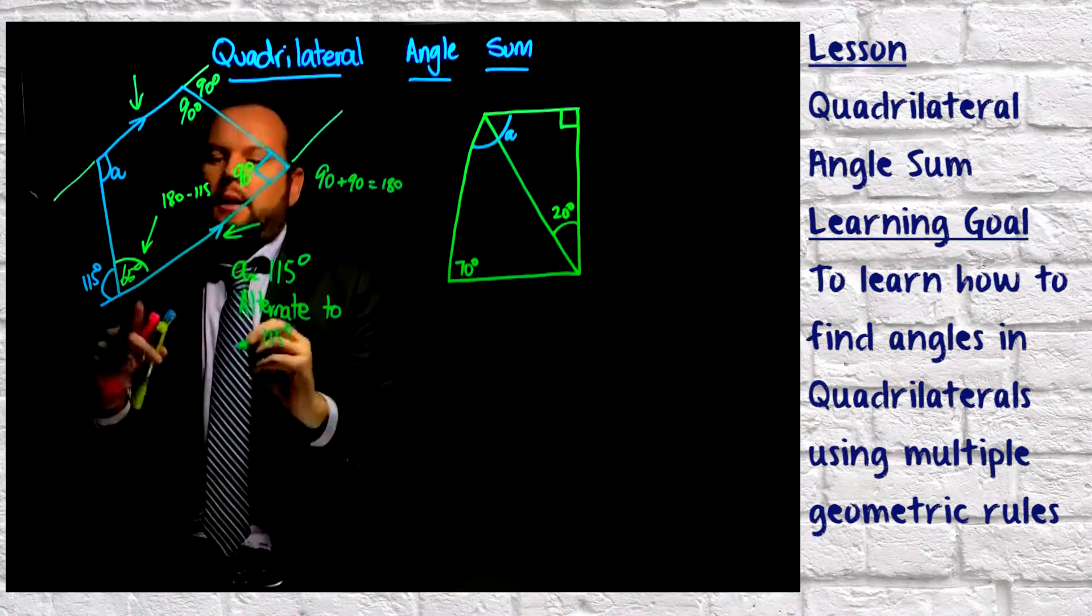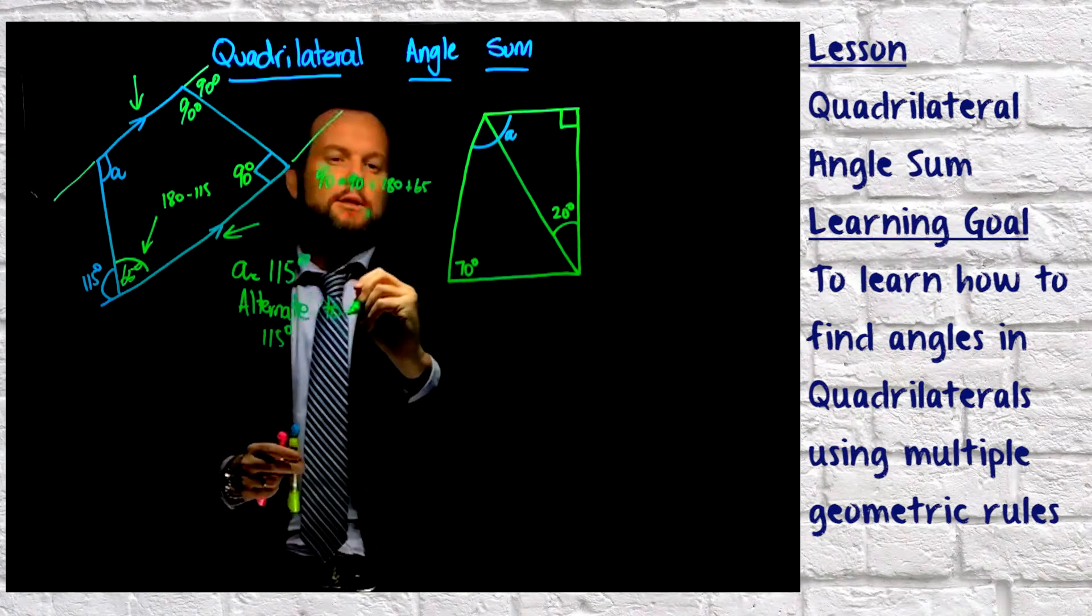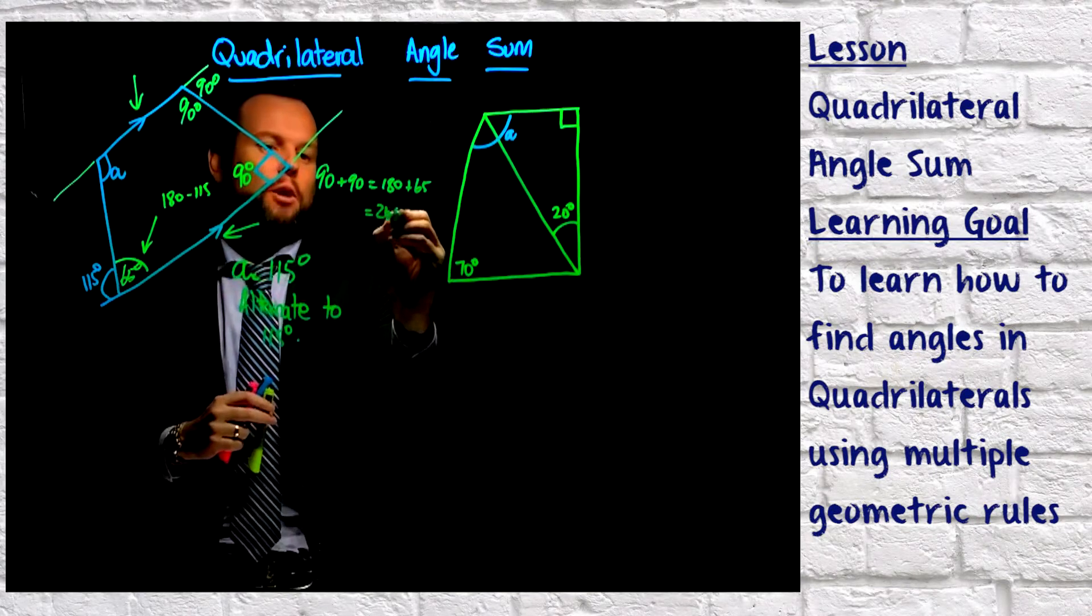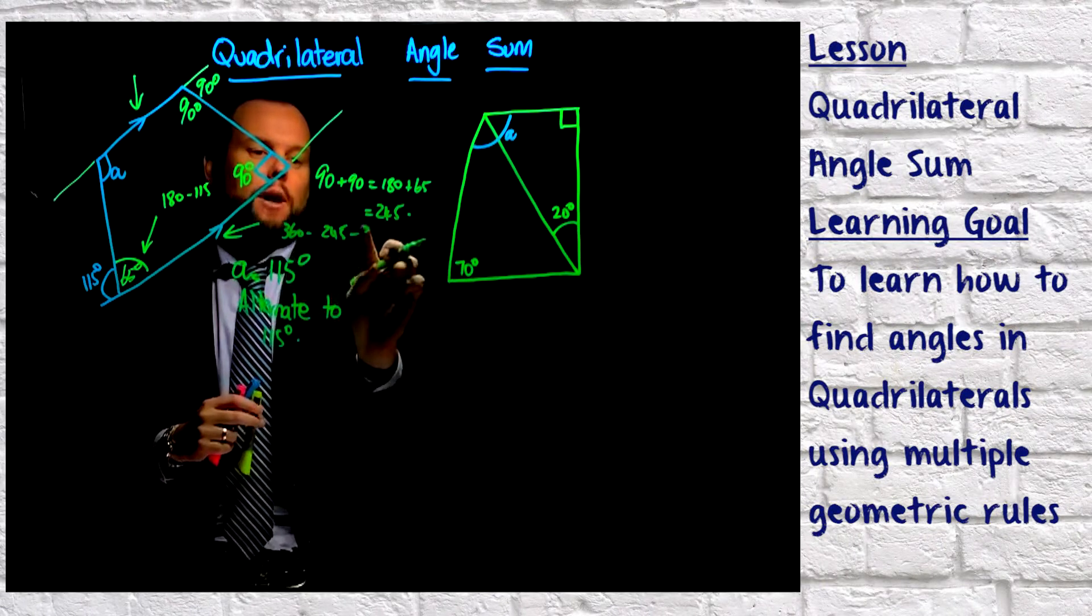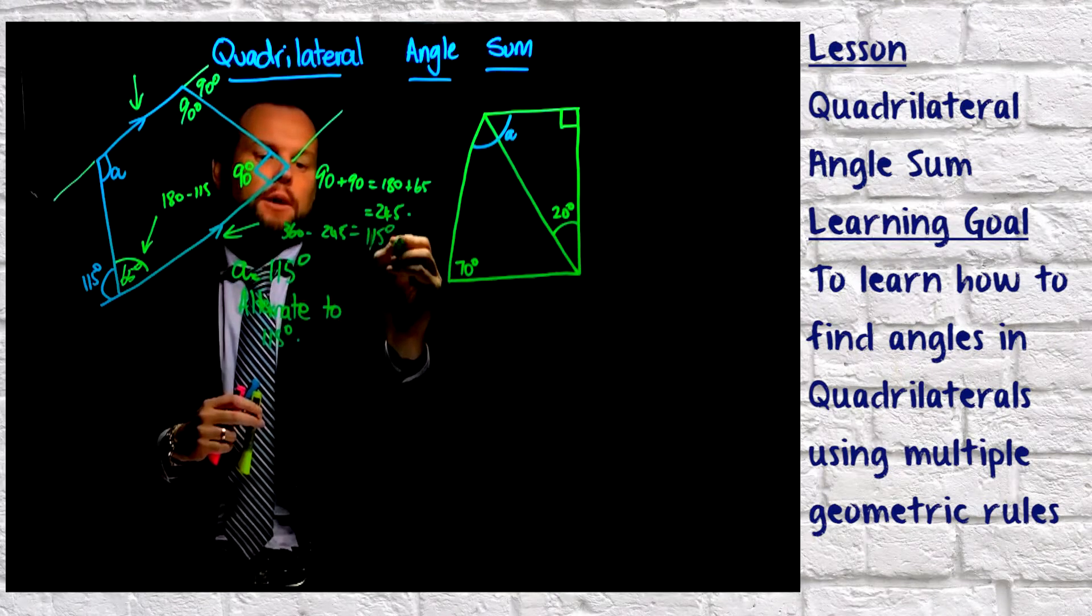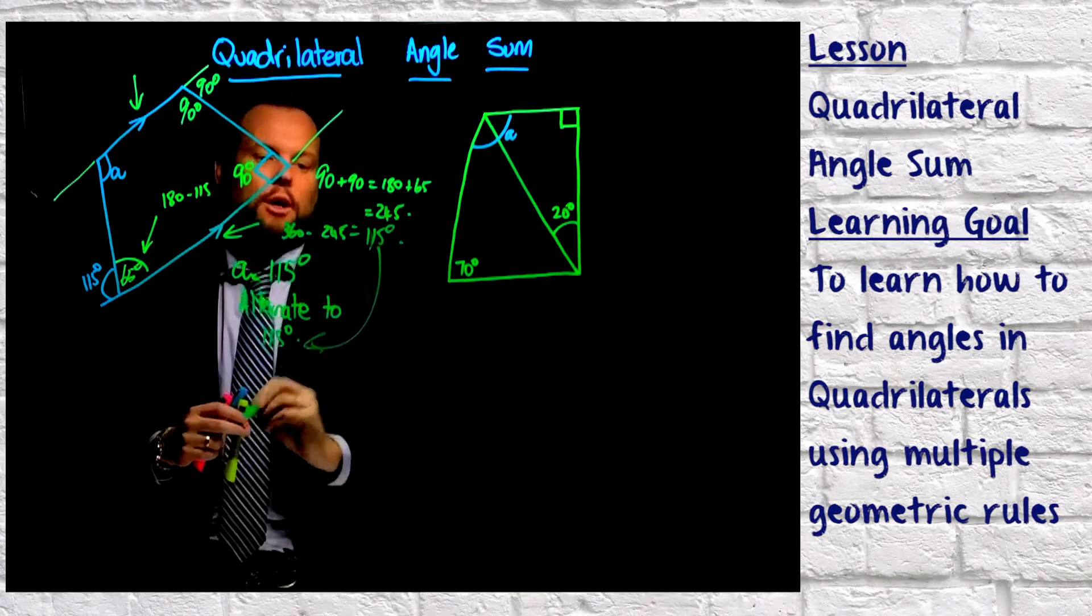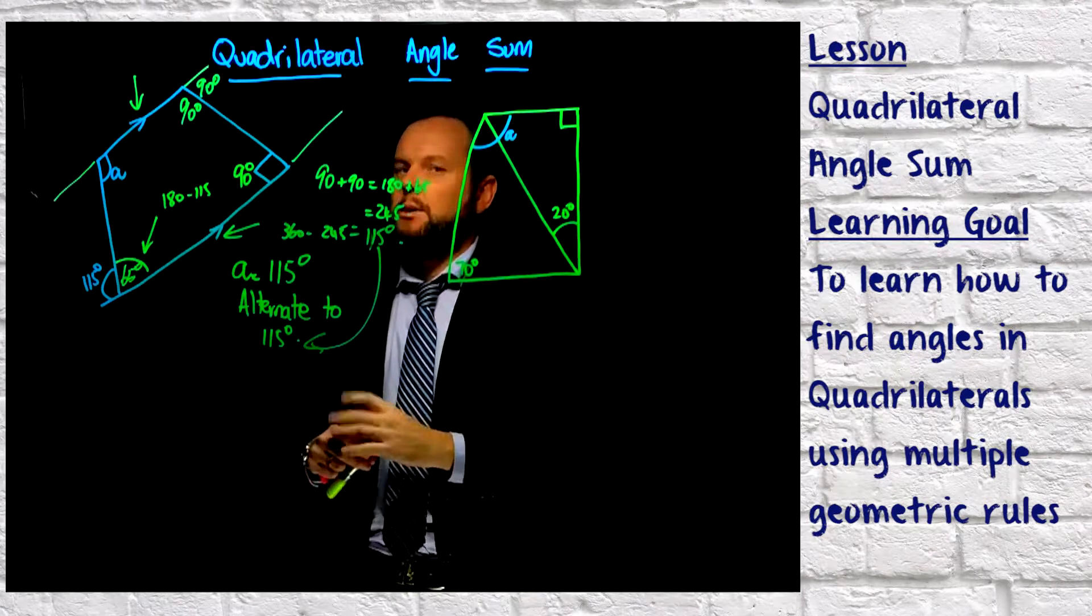And that gives us 245. And 245, 360 take away 245 gives me 115, which is exactly what we got. So we just sort of double-checked our answer there and we got the same answer, which is great.